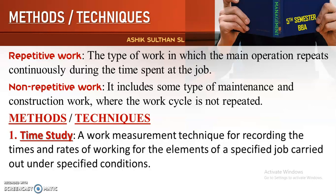The first type of work is repetitive work, in which the main operation repeats continuously during the time spent at the job. Non-repetitive work includes some types of maintenance and construction work, where the work cycle is not repeated. In construction work, the main operation is non-repetitive.